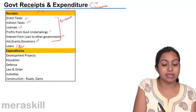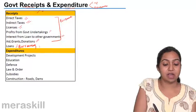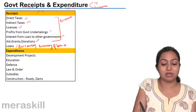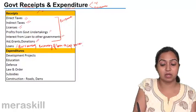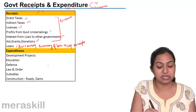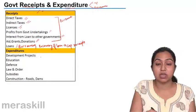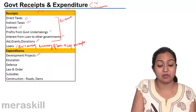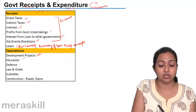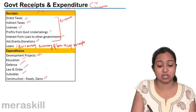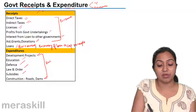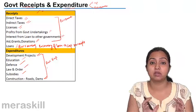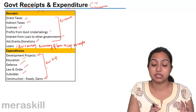Loans, borrowings, and recovery of old loans — all these are capital receipts of the government, as they are long-term earnings. Similarly, expenditures are also capital and revenue in nature. Revenue expenditures are those which are recurring, like what the government spends on development, education, defense, law and order, subsidies, and constructions. These are all revenue expenditures that the government has to do in order to maintain the normal machinery and workings of the government.